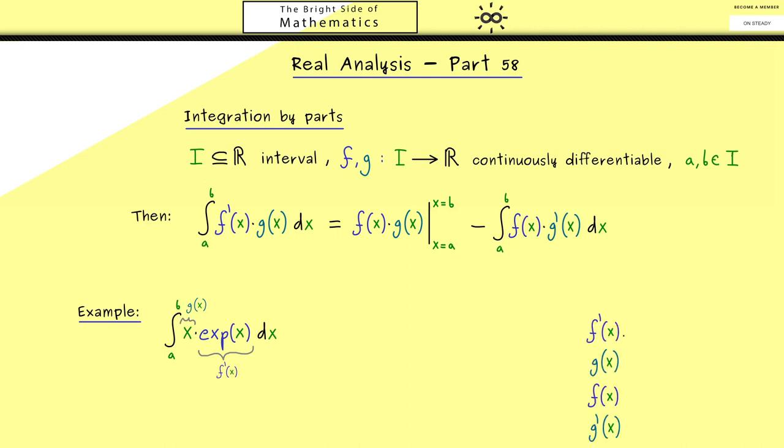I always would suggest writing down all four functions that are involved here. We already know f prime and g are fixed by the integral. Then we have to know an antiderivative, which for the exponential function is very simple—it's just the exponential function again. Then g prime is just the derivative of x, which is 1. The combination of the first two functions is the original integral, these two functions give the middle part, and these two give the last integral.